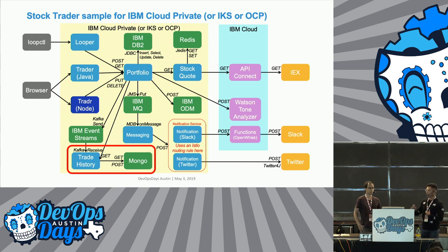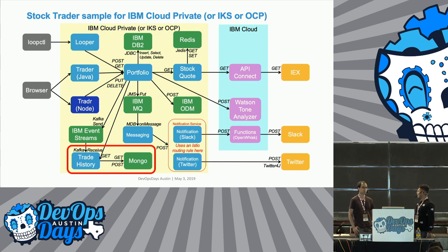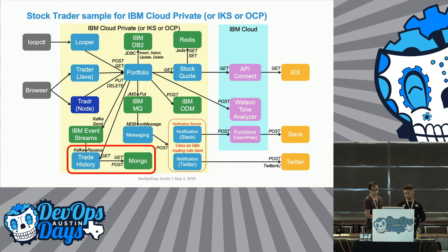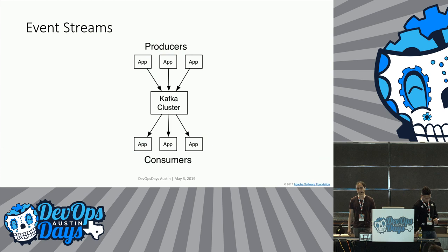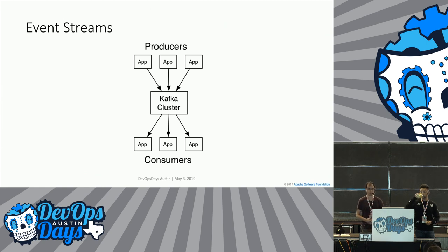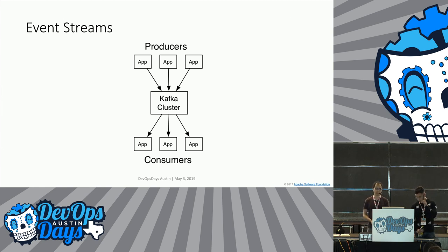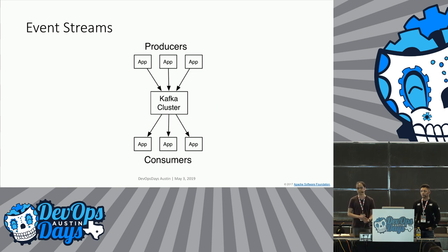Kevin and I were tasked with adding the trade history application, which is in the bottom left-hand corner. It acts as a consumer in the EventStream and persists data to a Mongo database. For those unfamiliar with EventStreams, here's a simple diagram showing a flow between the producers and the consumers. At the top, producers are applications that generate content and data, and send it into a topic in the EventStream.